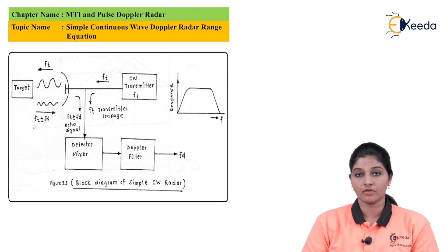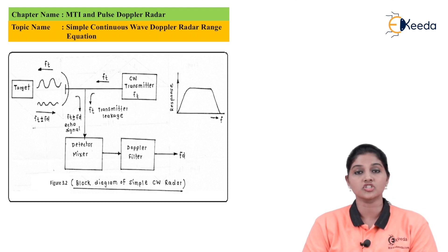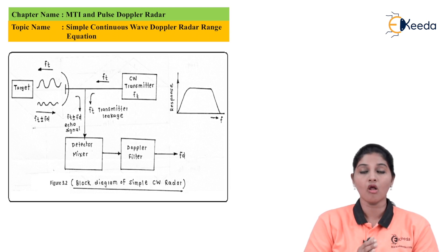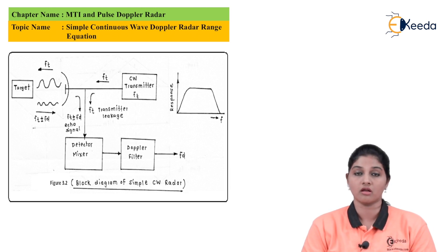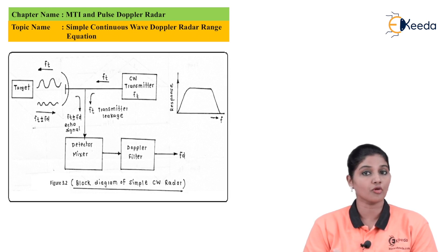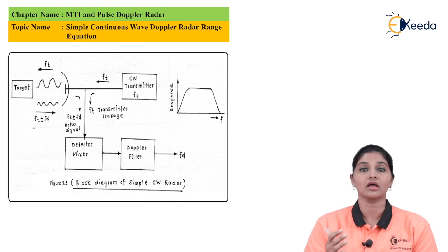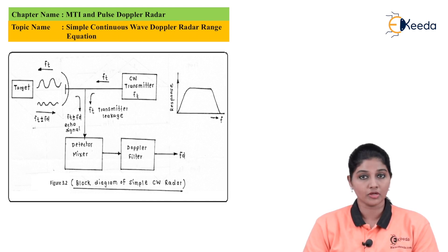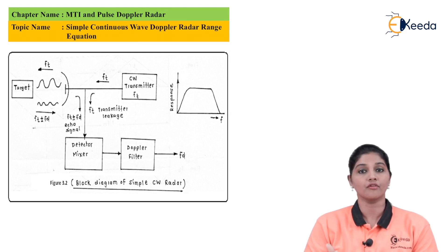In continuous wave radar, the transmitter generates oscillations at frequency FT which is transmitted directly by using the antenna. The reflected signal from the receiver determines whether the object is moving towards the radar or away from it. If the Doppler shift is positive (plus FT), it indicates the target is moving close to the radar system. If the Doppler shift is negative (minus FT), it indicates the target is moving away from the radar.